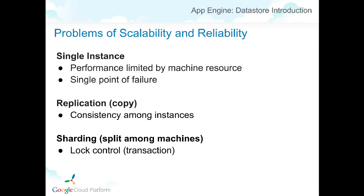Let's look at server configurations for databases. The server can be a single instance — a simple configuration, but the performance is limited by hardware resources and it's a single point of failure. If we add replication or copies, it increases reliability, but raises the issue of consistency among all server instances. We can also shard — split the data into multiple machines so they all work as one — but sharding often complicates transactions.